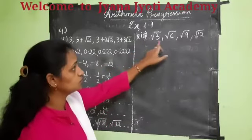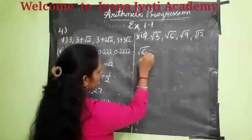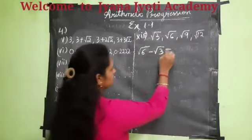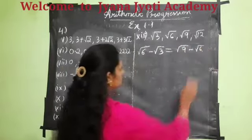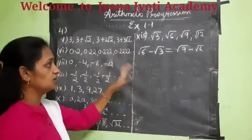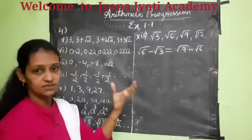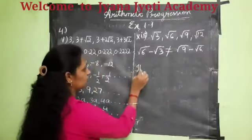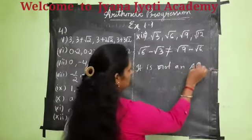Thirteenth one: root 3, root 6, root 9, and root 12 is given. So children, can you subtract root 3 from root 6? This should equal root 9 minus root 6. Here you do not have any common terms to take out and no coefficients to subtract directly. So these are not equal, therefore it is not an AP.